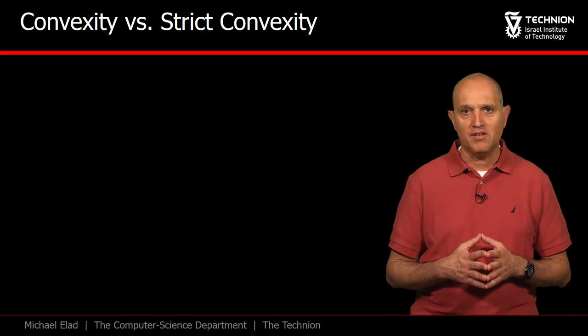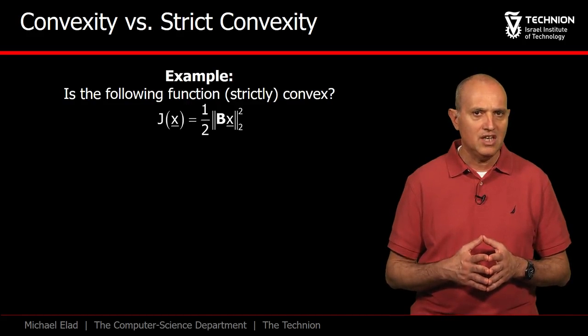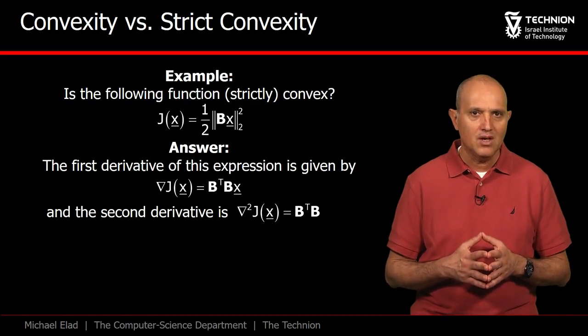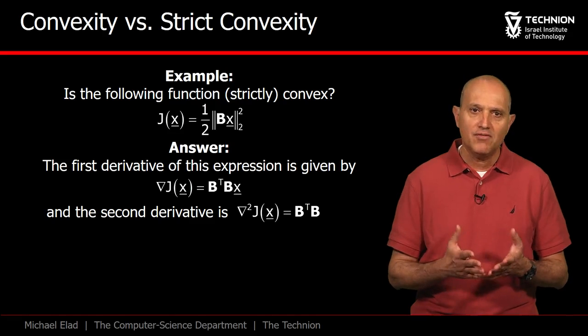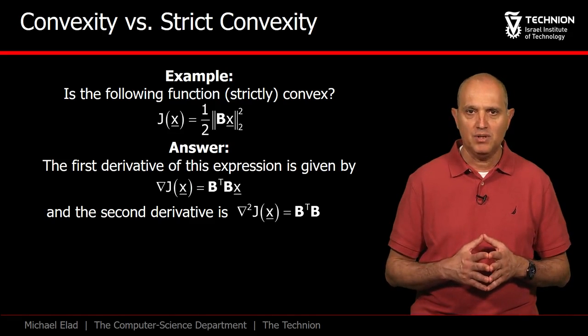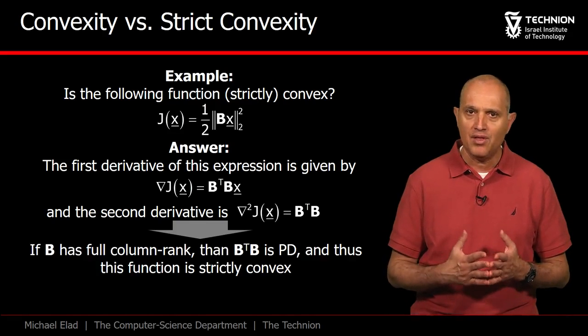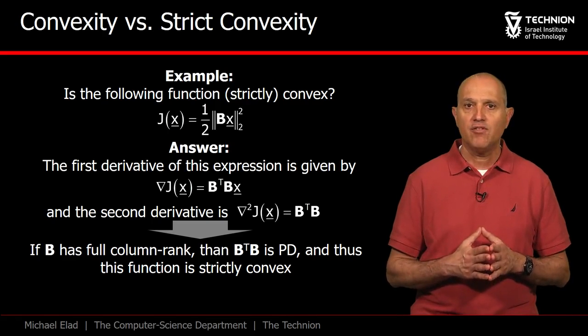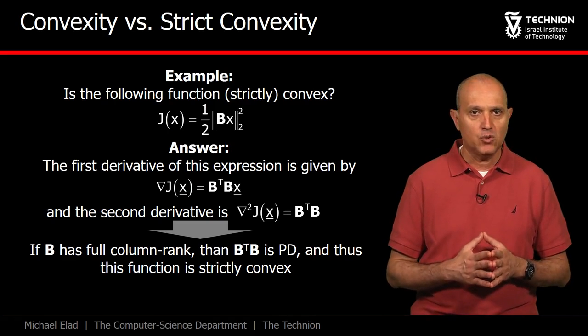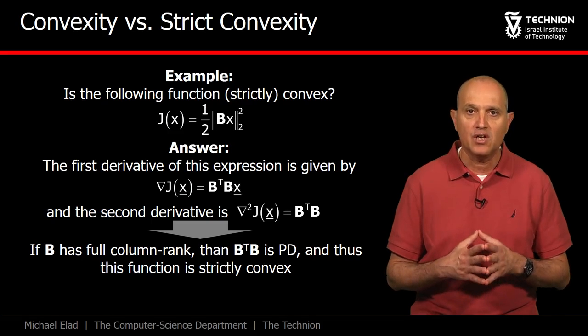Here is an example to illustrate the various ideas we described. Is this function convex? Is it strictly so? We shall answer these questions by computing the Hessian of the function, given this time by B transpose B. This matrix is positive semi-definite for all B, and thus the function is definitely convex. Moreover, if B has a full column rank, B transpose B is positive definite, and thus the function becomes strictly convex.